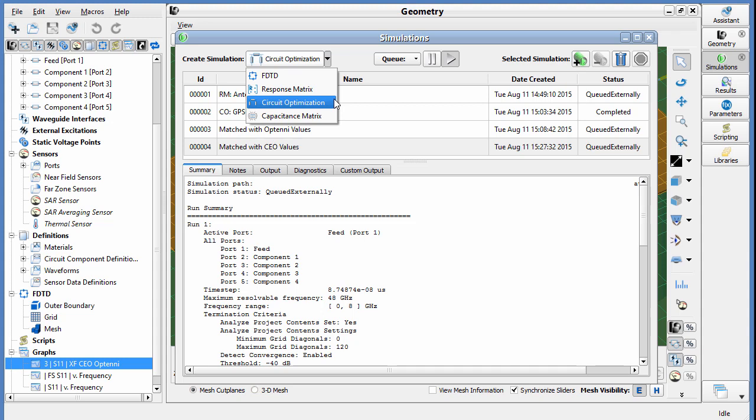Here is circuit optimization, the second part of CEO. This menu is where we define goals for efficiency and S-parameters and where we specify allowable component values.